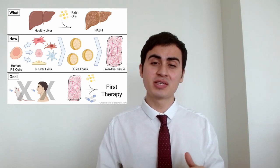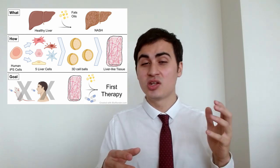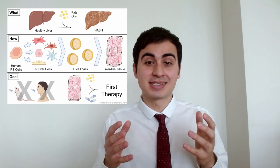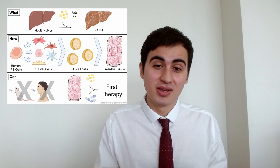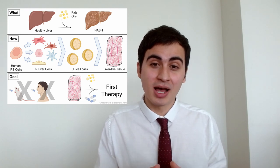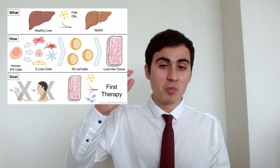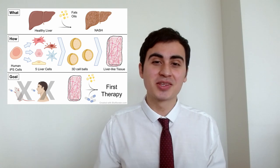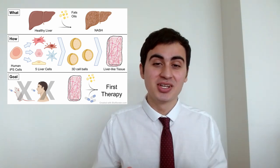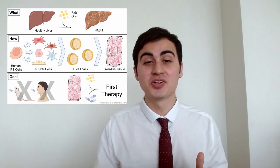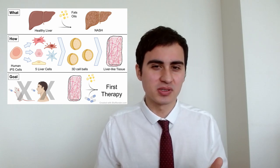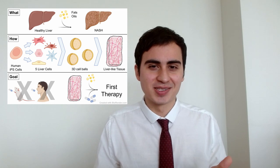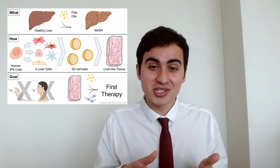So with this liver tissue, I can add fats and oils, and I can essentially create NASH in a dish. And with this model, I believe I can make the mountain much smaller and the boulder much lighter, so it is that much easier to find a cure for NASH. So we don't need to use animal models or human test subjects. We have NASH in a dish.